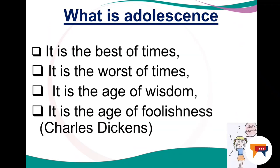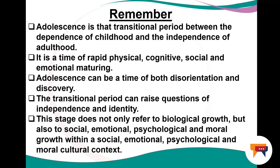What is adolescence? As Charles Dickens said, it's the best of times, it is the worst of times, it is the age of wisdom and it is the age of foolishness. Remember, adolescence is the transitional period between the dependence of childhood and the independence of adulthood. It is a time of rapid physical, cognitive, social and emotional maturing. Adolescence can be a time of both disorientation and discovery. This transitional period can raise questions of independence and identity. This stage does not only refer to biological growth, but also to social, emotional, psychological and moral growth within the social, emotional, psychological and moral cultural context.